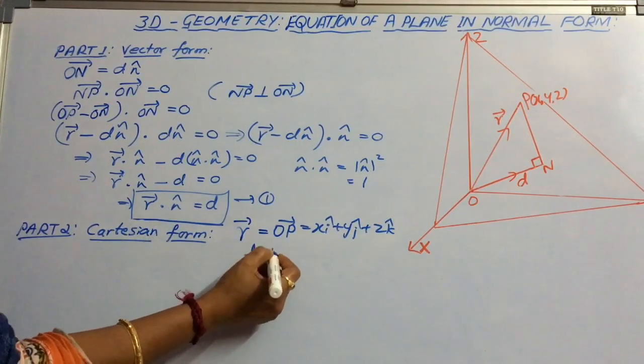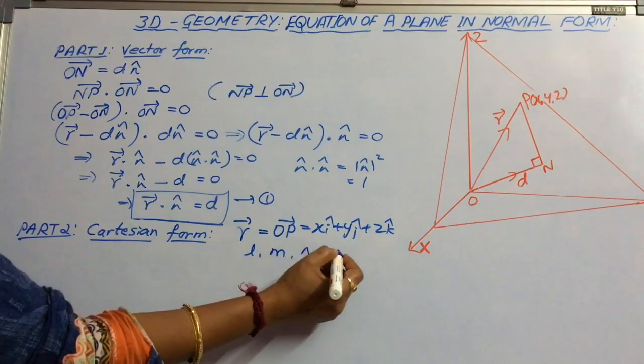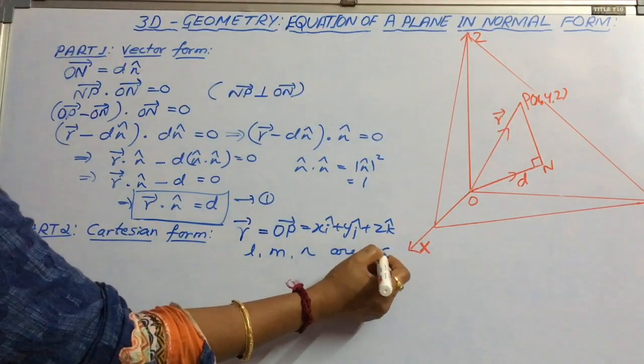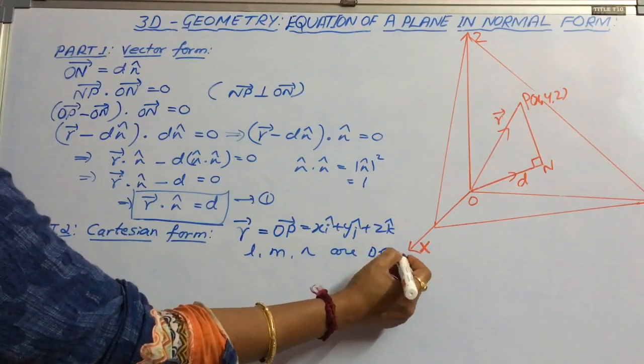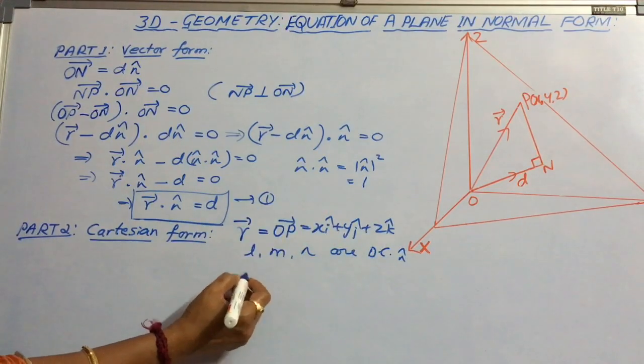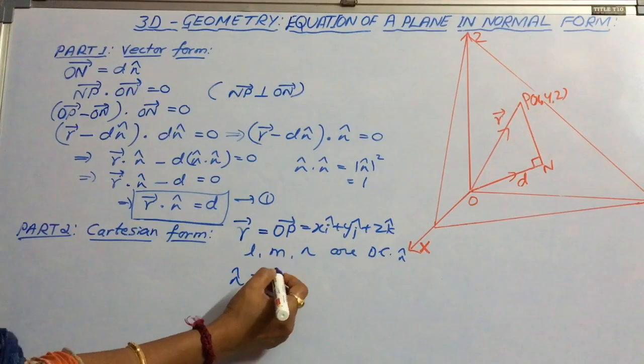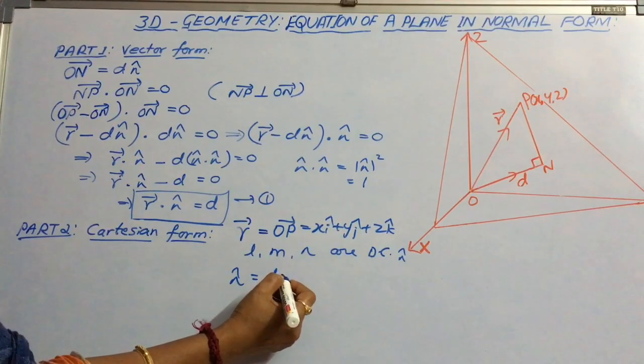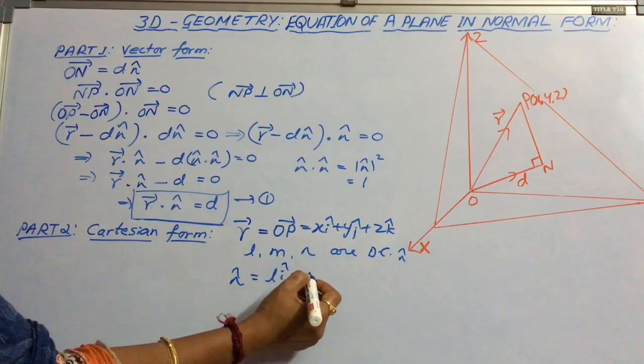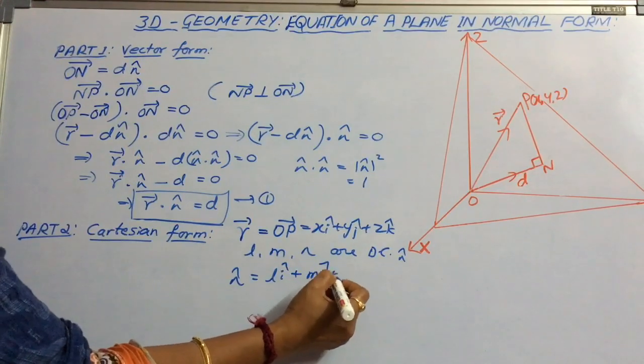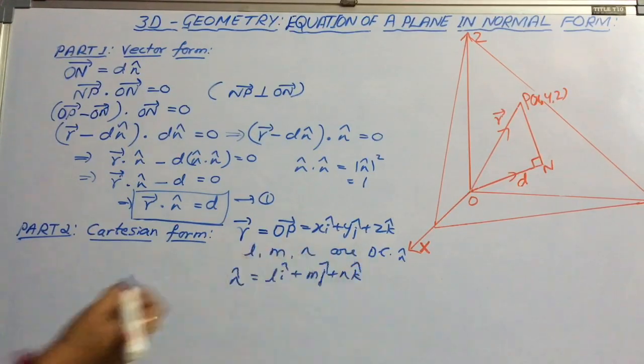Therefore, l, m and n are the direction cosines of n cap. Then that n cap can be written as l i cap, m j cap plus n k cap.